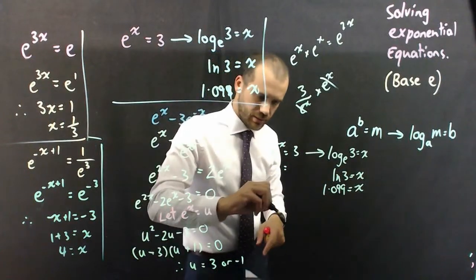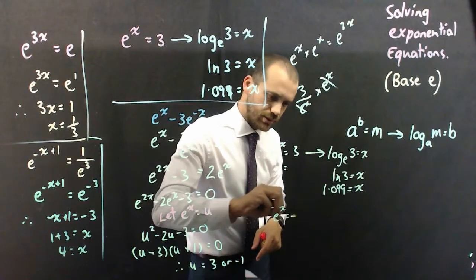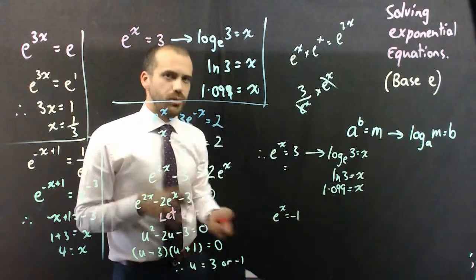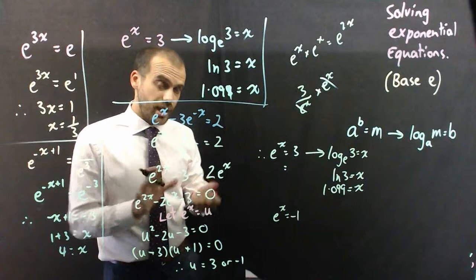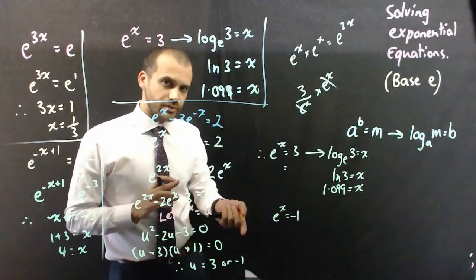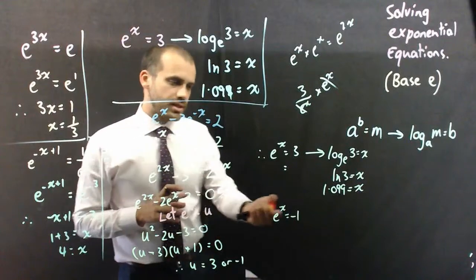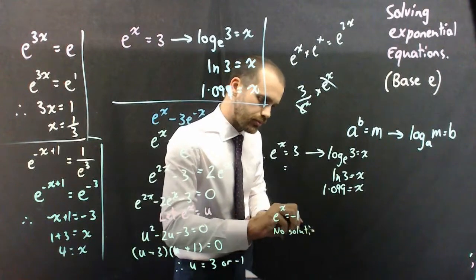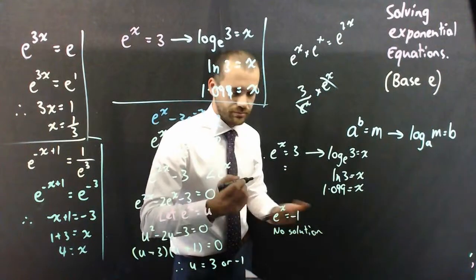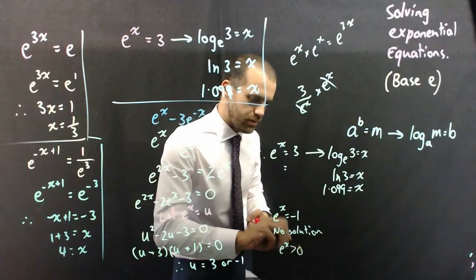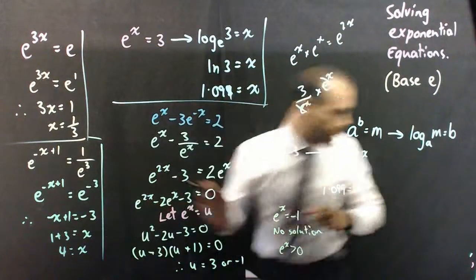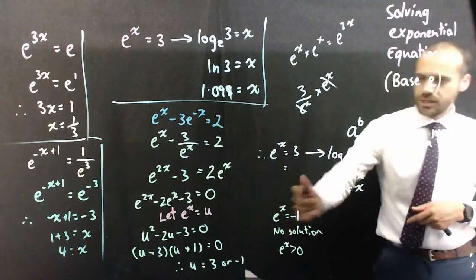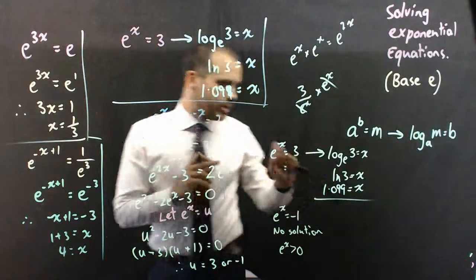Now, if I try the other one, so, if I say e to the x equals negative 1, there's just no way for that to happen. If I take a number, 2.7 something, and I raise it to any power at all, the answer is going to be positive. It doesn't matter whether I raise it to a negative power or a positive answer, the answer has to be greater than 0. So, I can write no solution, because e to the x must be greater than 0. So, my only answer to that quadratic is this, x equals 1.099.